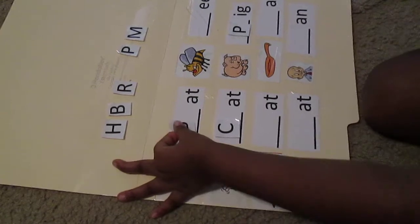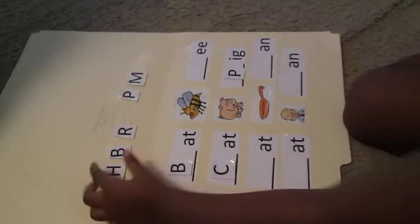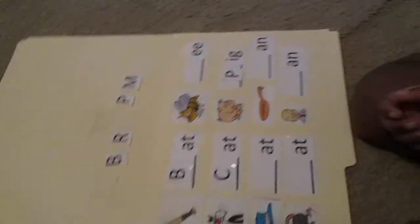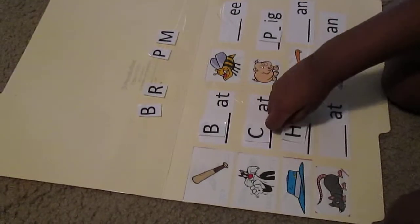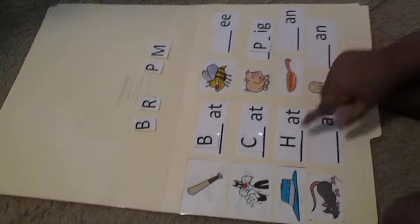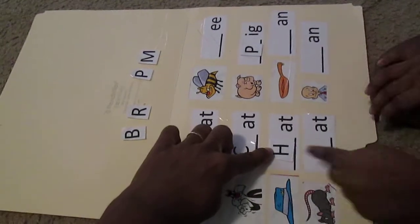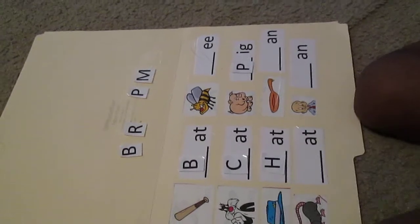B. B. What's that word? Bat. Bat. B-A-T spells bat. Uh-oh, it came off again. Oh, man. There you go. That's okay. Now, what's that word? Hat. Hat. Spell it. H-A-T. Good job. Give me five. Nice.